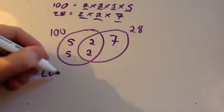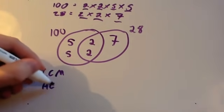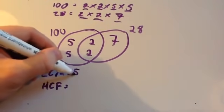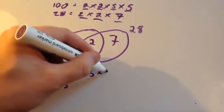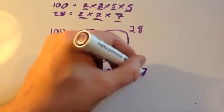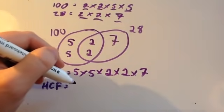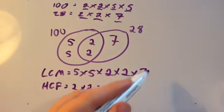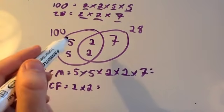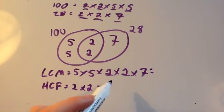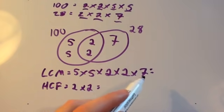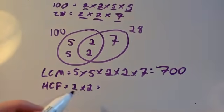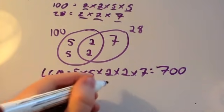Now we're going to work out the LCM and the HCF. The lowest common multiple is found by multiplying all numbers together: 5 times 5 times 2 times 2 times 7. 5 times 5 is 25, times 2 is 50, times 2 is 100, times 7 is 700. The highest common factor is found by multiplying the ones in the middle together: 2 times 2, which is 4.